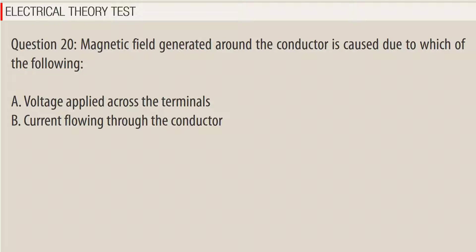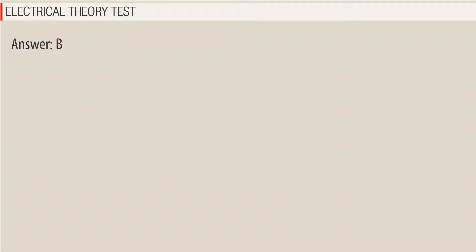Question 20. Magnetic field generated around the conductor is caused due to which of the following? a. Voltage applied across the terminals. b. Current flowing through the conductor. Answer: B.